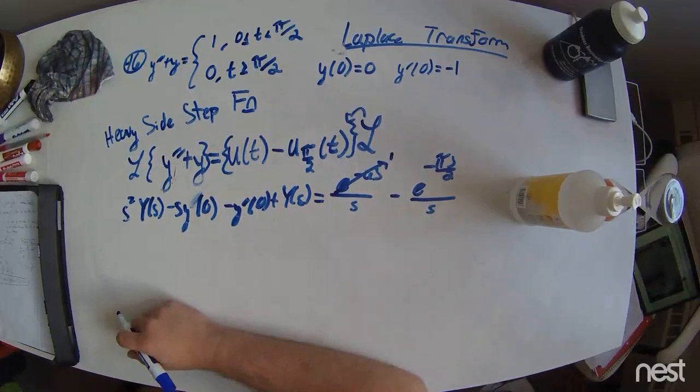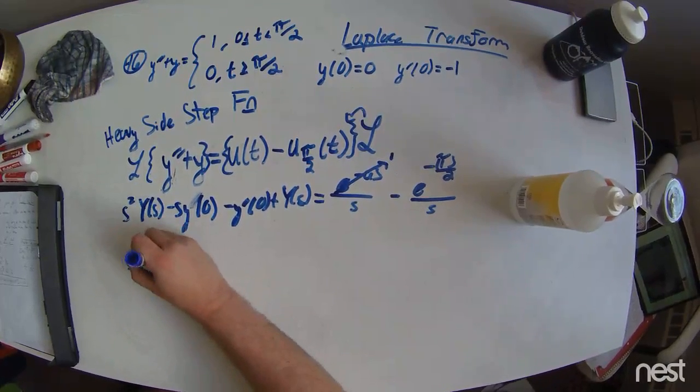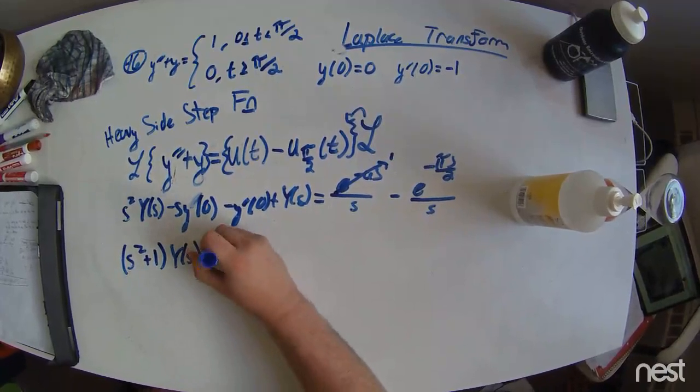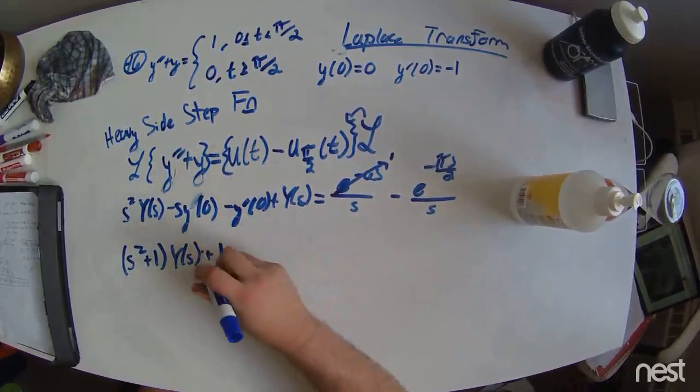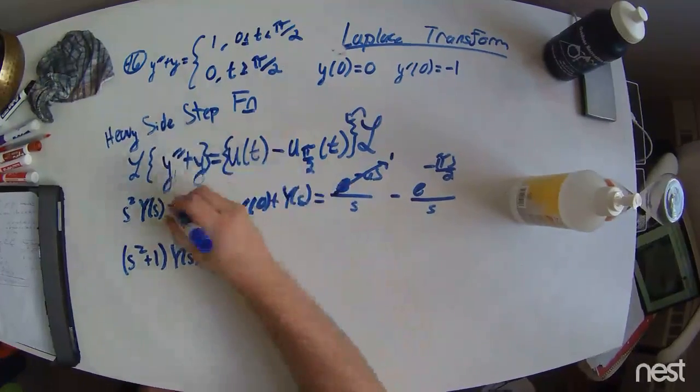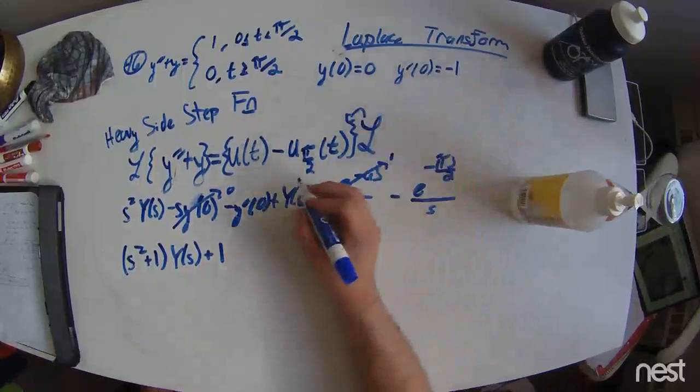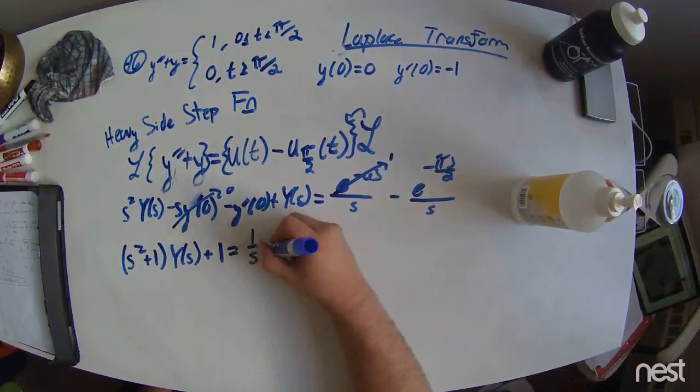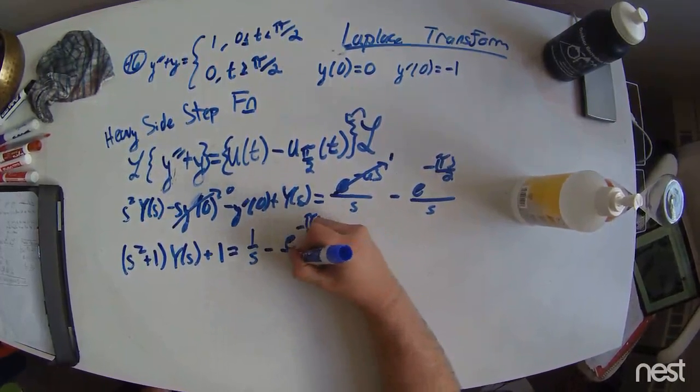Now, factoring all these things together, we can get s squared plus 1 times y of s plus 1. This comes from the application of our initial conditions in the problem. Since y of 0 equals 0, this term right here goes to 0. Since y prime of 0 equals negative 1, this term here goes to positive 1. Now, this equals 1 over s times e to the negative pi s over 2 over s.